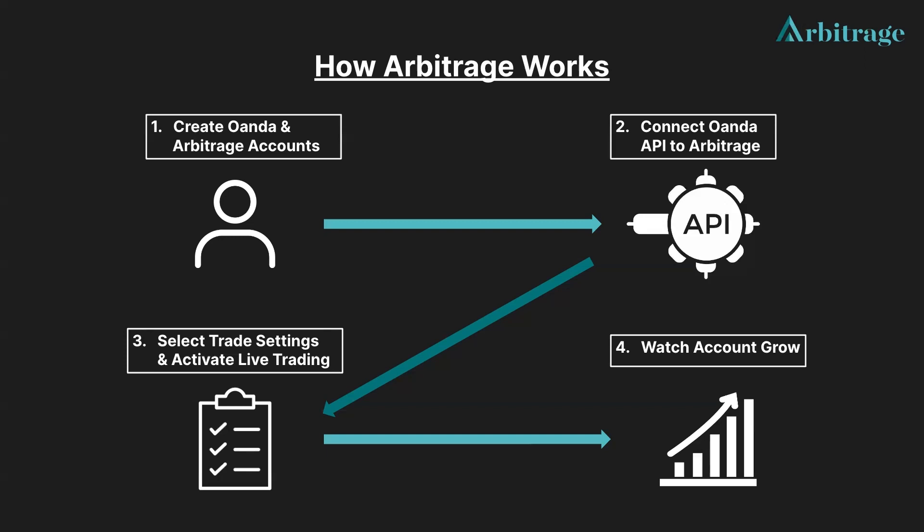To access this service, users pay a 1% monthly fee of their serviceable amount of capital traded through Arbitrage. You can think of serviceable capital as the amount of money that Arbitrage will trade in your brokerage account. So if you pay for $10,000 to be traded in your account but you have $20,000 in your brokerage, we will only trade up to that $10,000 serviceable amount.